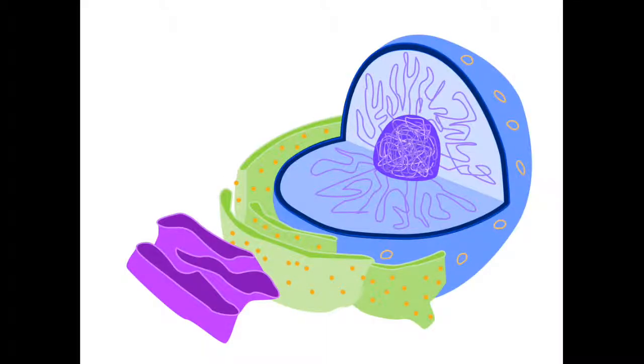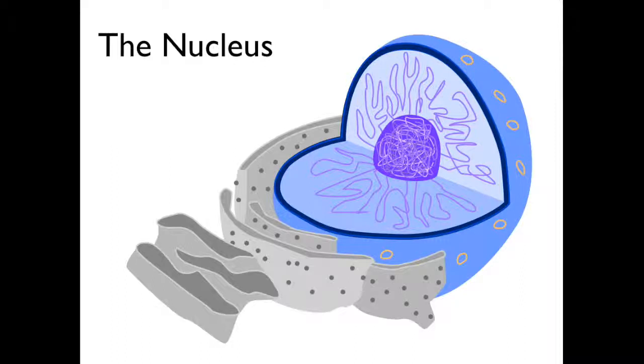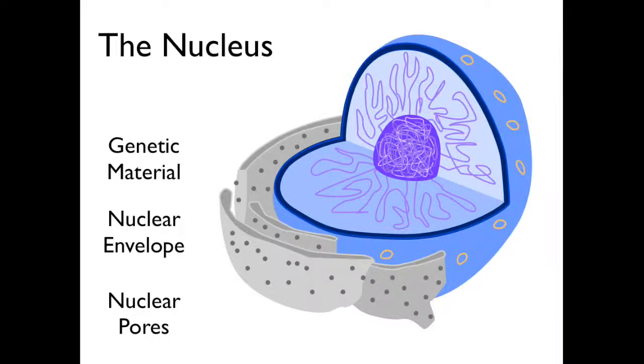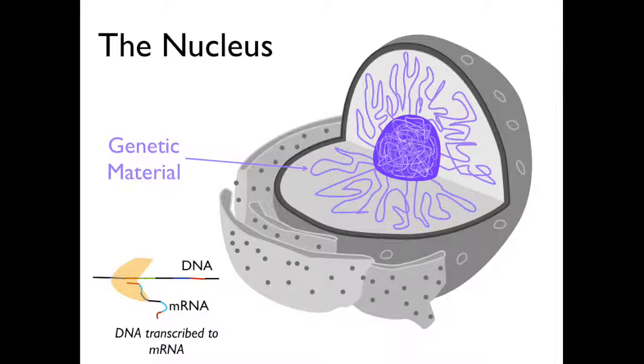Synthesis begins in the nucleus. The primary purpose of the nucleus is to store genetic material, seen here in purple. The genetic material, or DNA, is transcribed by an enzyme to make mRNA, or messenger RNA.